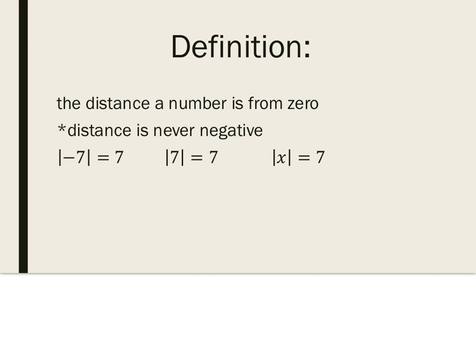Just a reminder, the absolute value is the distance a number is from 0. And remember, distance is never negative. You never say you're negative 3 feet away from something. You're just 3 feet away from them.